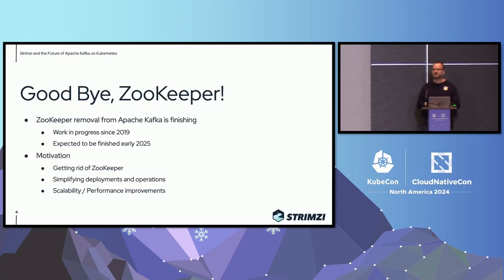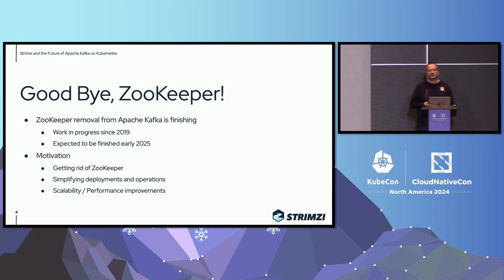What makes Strimzi maybe a bit different from some of the other CNCF projects is that we quite heavily depend on Apache Kafka, which is not part of Strimzi, and it has its own roadmap and its own features being implemented. One of the main features Kafka was working on for the last years was the removal of the Zookeeper dependency, and really a lot of the work we have been doing in the last months and years was around this Zookeeper removal.